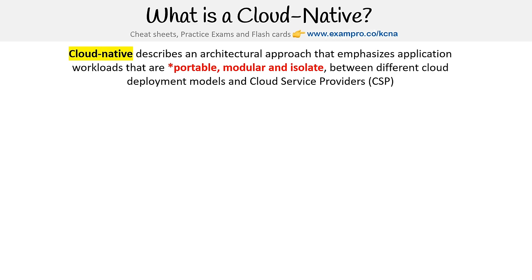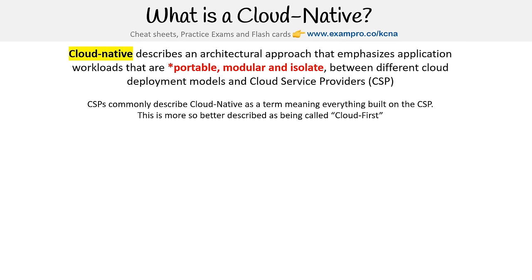What is cloud native? Cloud native describes an architectural approach that emphasizes application workloads that are portable, modular, and isolated between different cloud deployment models and cloud service providers. When cloud service providers like AWS, Azure, or GCP use the term 'cloud native,' it originally meant everything built on top of the cloud service provider — more meaning 'cloud first.' You could start on-premise in your own data center, but if you choose to build entirely in the cloud provider, that is a cloud-first approach.